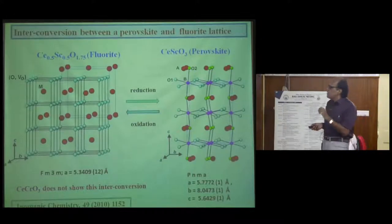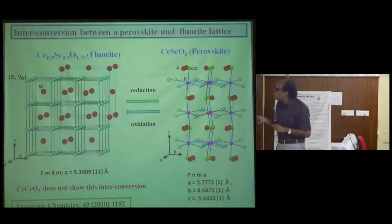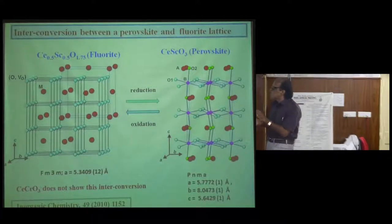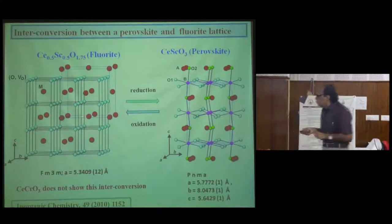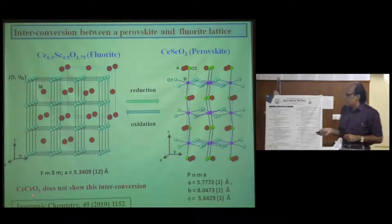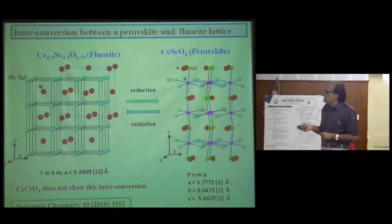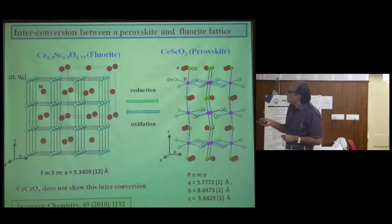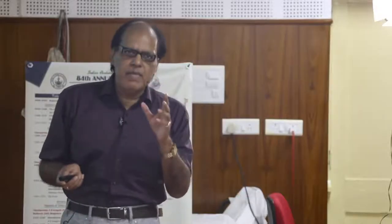The most important result of this work is the interconversion of the fluorite lattice to perovskite and vice versa, and this interconversion is achieved simply by the addition of a slight amount of oxygen. In a nutshell, this compound can dispense oxygen the way you want. Interestingly, CeCrO3 discussed earlier does not show this interconversion, because chromium cannot adopt the fluorite structure, whereas scandium can adopt the coordination numbers of both perovskite and fluorite.